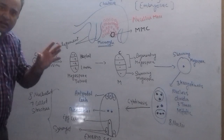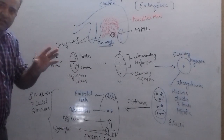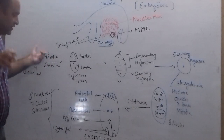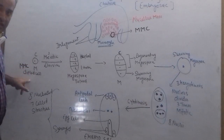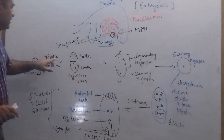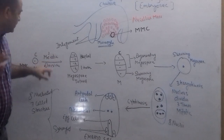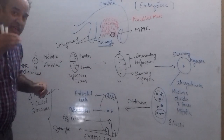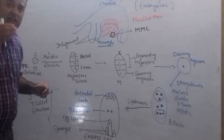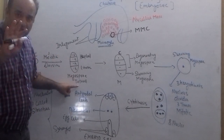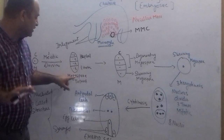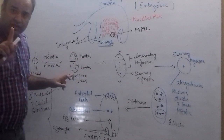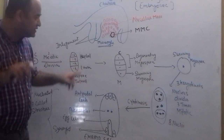Now we study how the embryo sac develops. This Mega Spore Mother Cell is a diploid cell. When drawing the cell, we mention the micropylar end and the chalazal end. In the Mega Spore Mother Cell, which is a diploid cell, one meiotic division will take place, resulting in four cells arranged in a linear manner. These are known as the megaspore tetrad, and all are haploid cells.